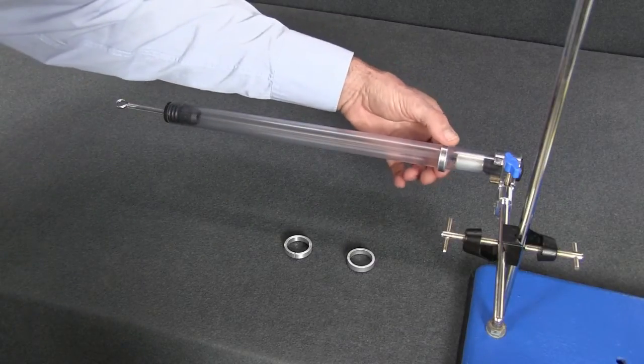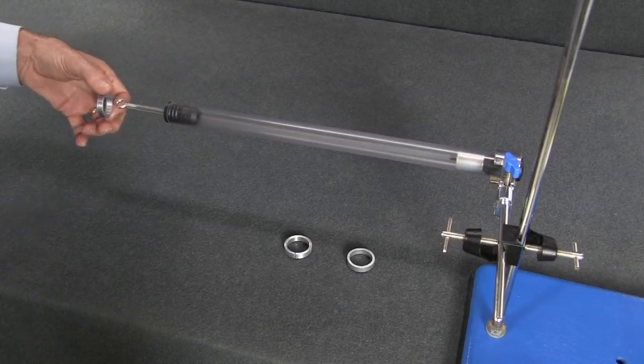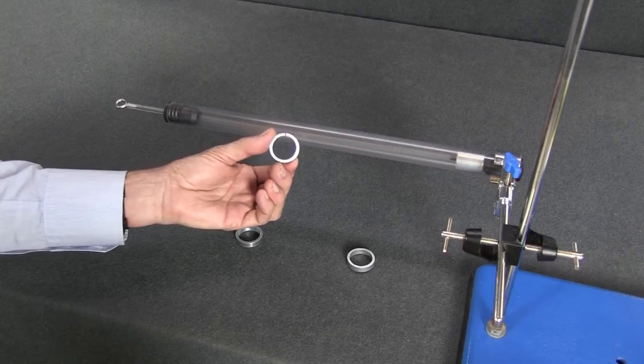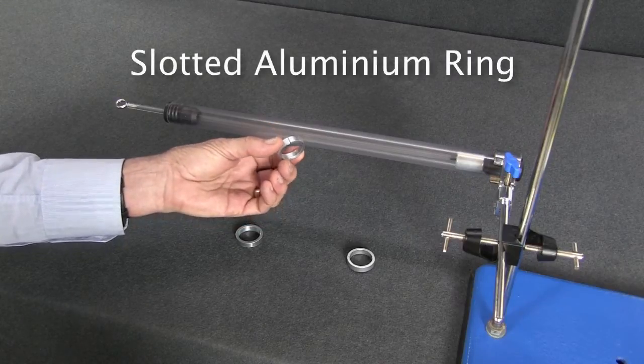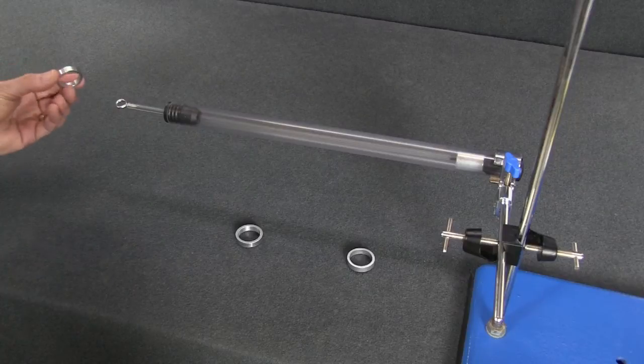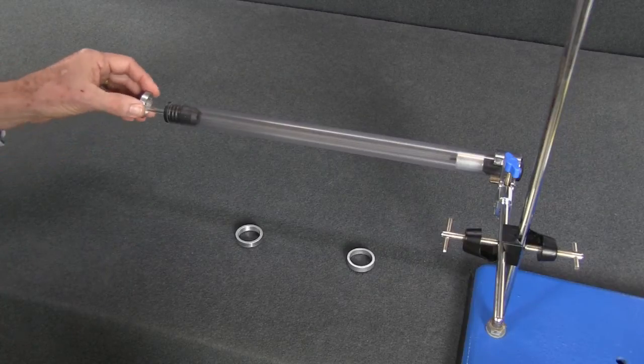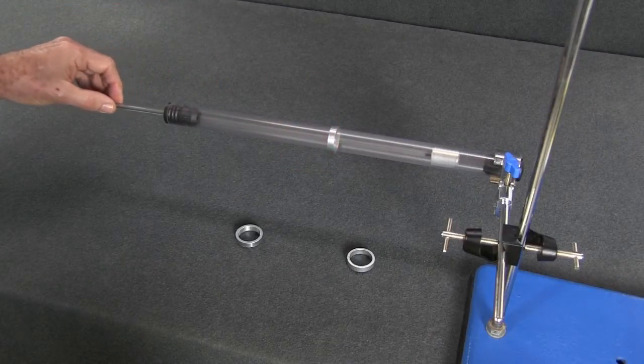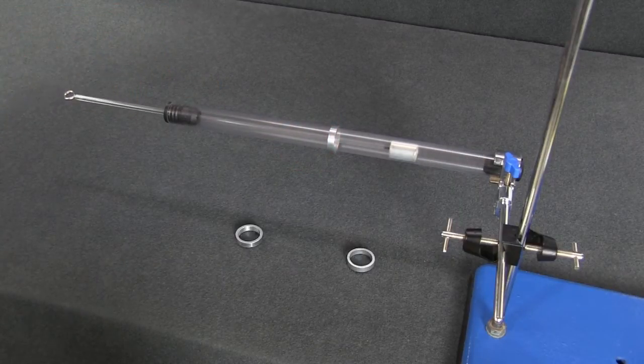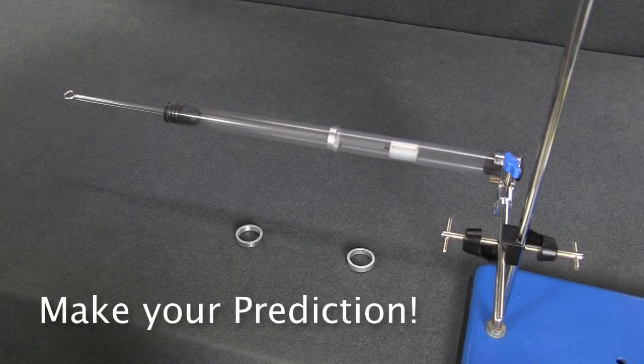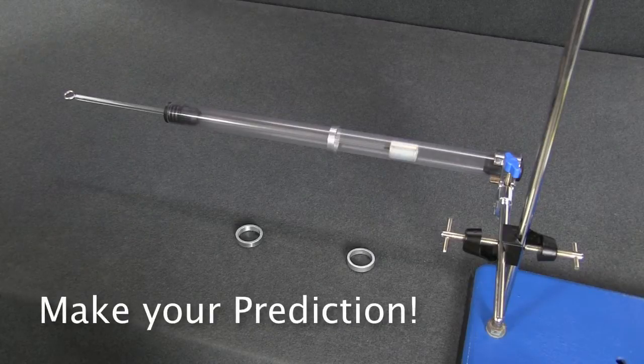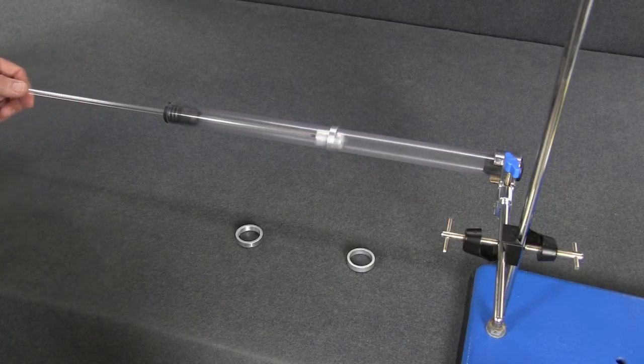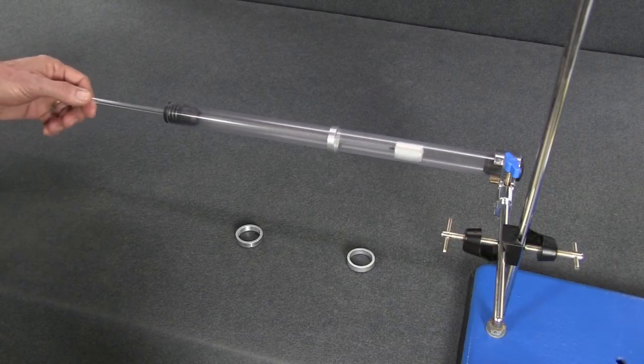Let's try the second ring. This ring is also aluminum but it's had a slot cut in one end. Now what do you think will happen this time? Hmm, not a lot happening here.